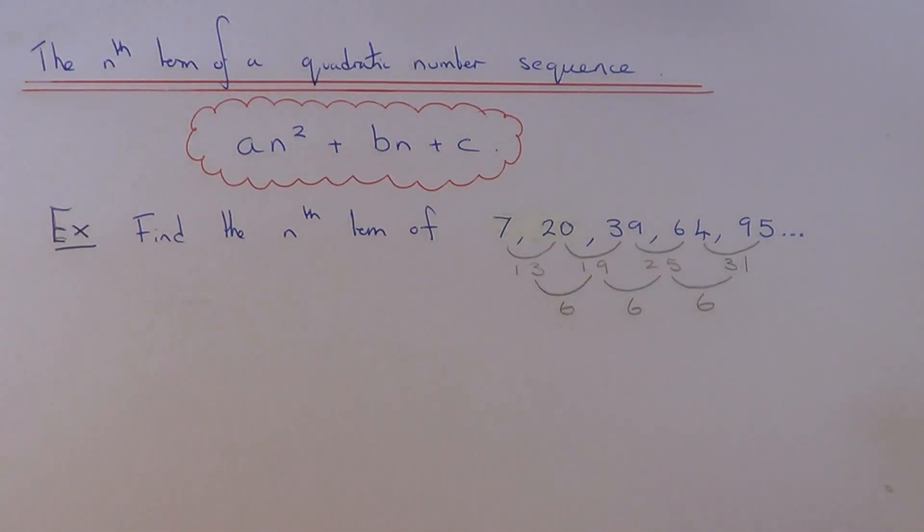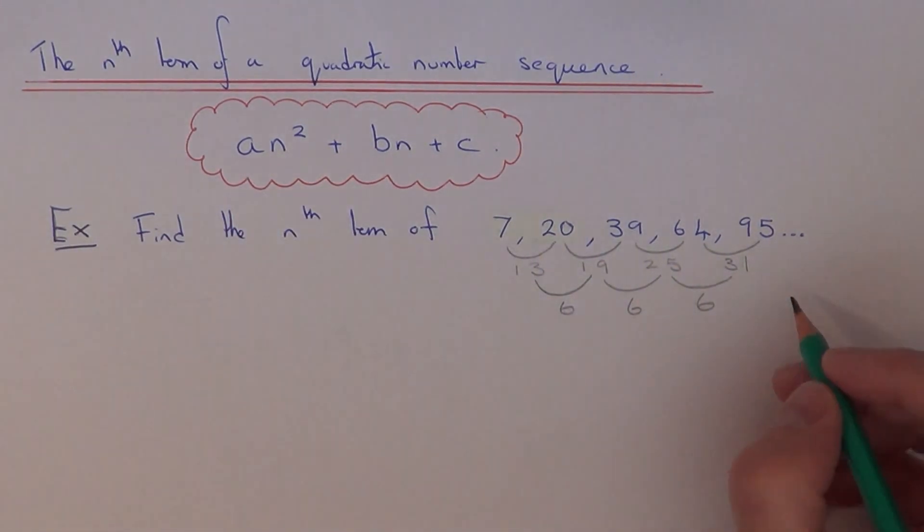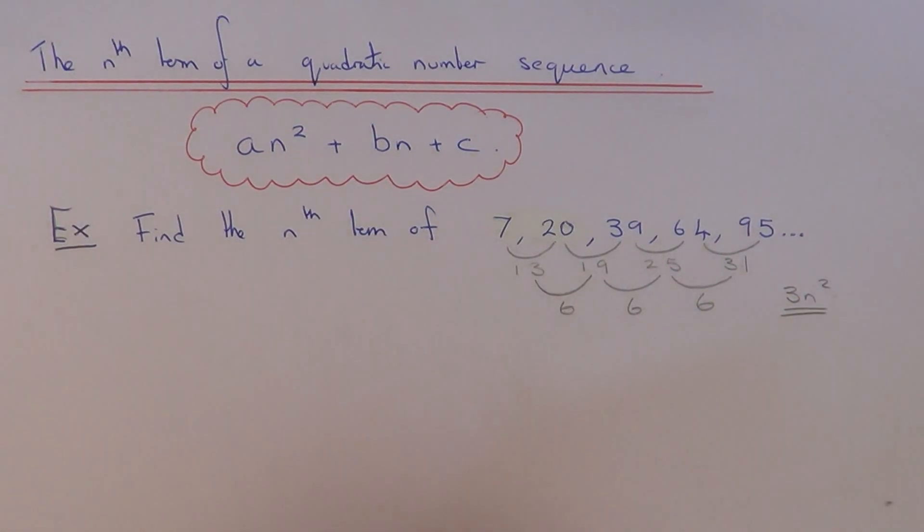And we can also use the second difference to figure out the value of a. And to get a, all we need to do is half the second difference. So half of 6 is 3. So this will tell us that the first bit of our formula is 3n².